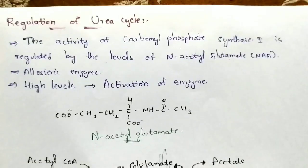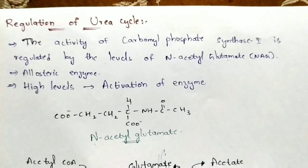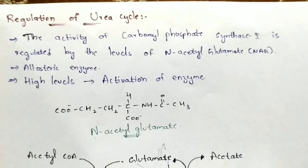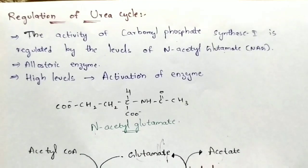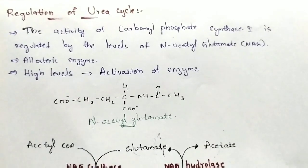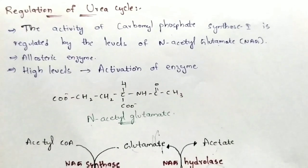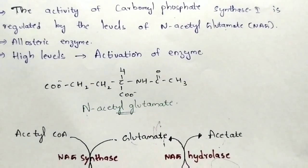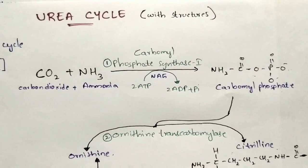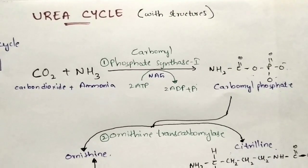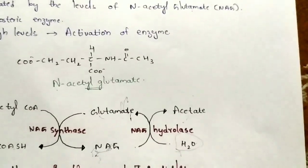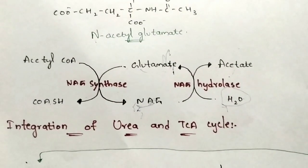Regarding regulation of the urea cycle: the activity of carbamyl phosphate synthase 1 is regulated by levels of N-acetyl glutamate (NAG). N-acetyl glutamate is an allosteric enzyme activator — when NAG is at high levels, activation of carbamyl phosphate synthase 1 takes place. In the first reaction, NAG functions as an allosteric activator for carbamyl phosphate synthase 1.